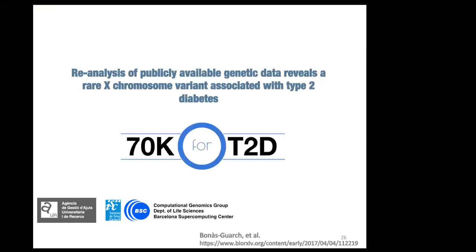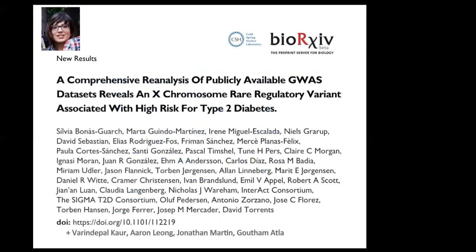This study was conducted at the Barcelona Supercomputing Center with collaboration from ROTIA and many other institutions. The goal of the study was to see how well we can use publicly available data to identify novel associations using different computational approaches. This project is called the 70K for T2D, with a logo made by Elias, our colleague in Barcelona.